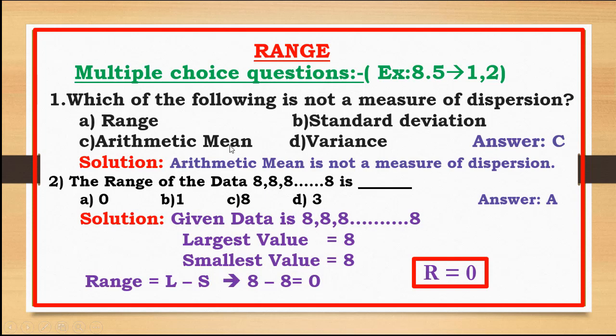Measures of central tendency include mean, median, and mode. Measures of dispersion — measures of dispersion — are a separate category of statistical concepts.